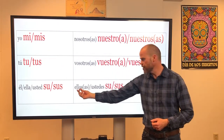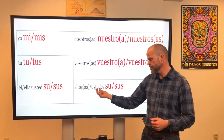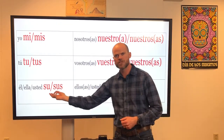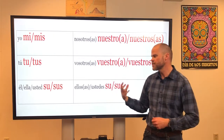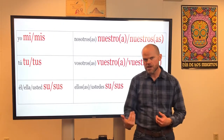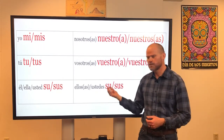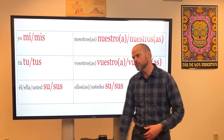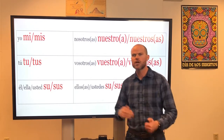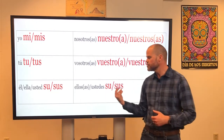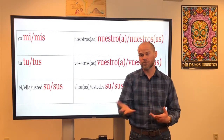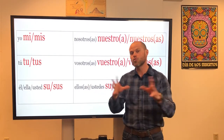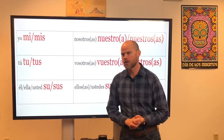And then finally, we have ellos, ellas, ustedes. Notice these are the same as the third person singular form. So if I want to say "their car," I could say su carro. If I want to say "their cars," I would say sus carros. This can mean "their," but it can also mean "your" when talking to a group of people, because ustedes is "you all." Muy bien.